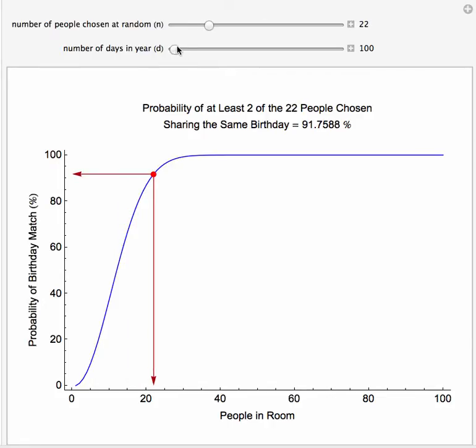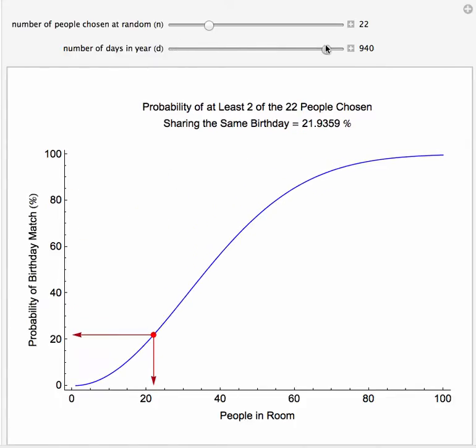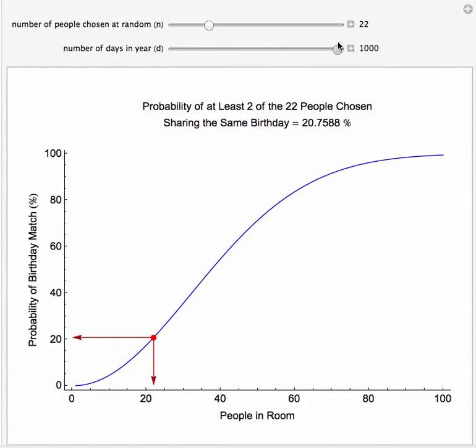Now we can also change the number of days in the year. As we increase the number of days in the year from 100 to 1000, the distribution as a whole lowers, indicating that we need more people in the room to assure a higher probability of a match. This should make sense intuitively.